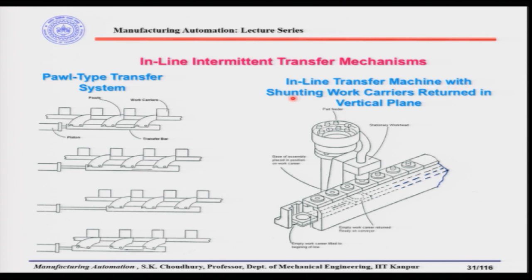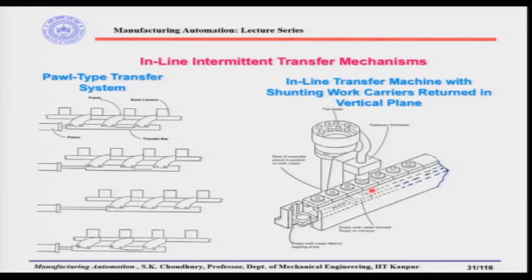Here is the inline transfer machine with shunting work carriers returned in the vertical plane. Parts move from one end, a lifting mechanism raises the empty work carrier back to the beginning of the line, and the line moves again taking the work carrier from one place to another. This is similar to what you see at airports — trays go along the conveyor, and empty trays are returned to the initial position. Here it is used for processing parts or sub-assemblies.